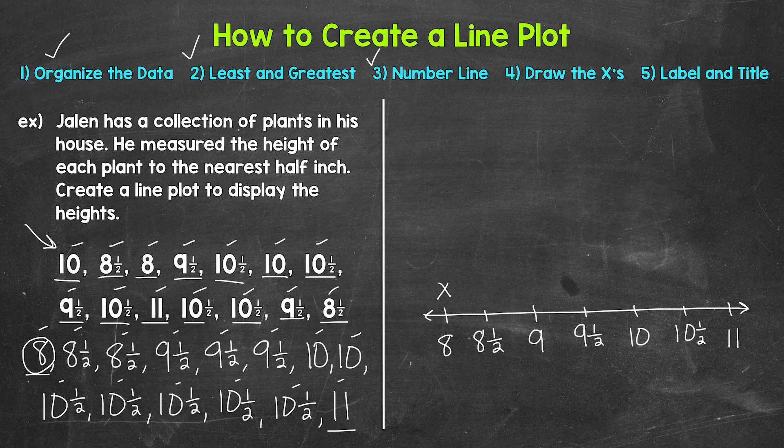The x's should all be the same size and lined up. Now let's move on to 8 and a half. How many plants were 8 and a half inches tall? 2. So we need 2 x's above 8 and a half. Next, we have 9. There weren't any plants that were 9 inches tall. So let's move on to 9 and a half. We need 3 x's above 9 and a half.